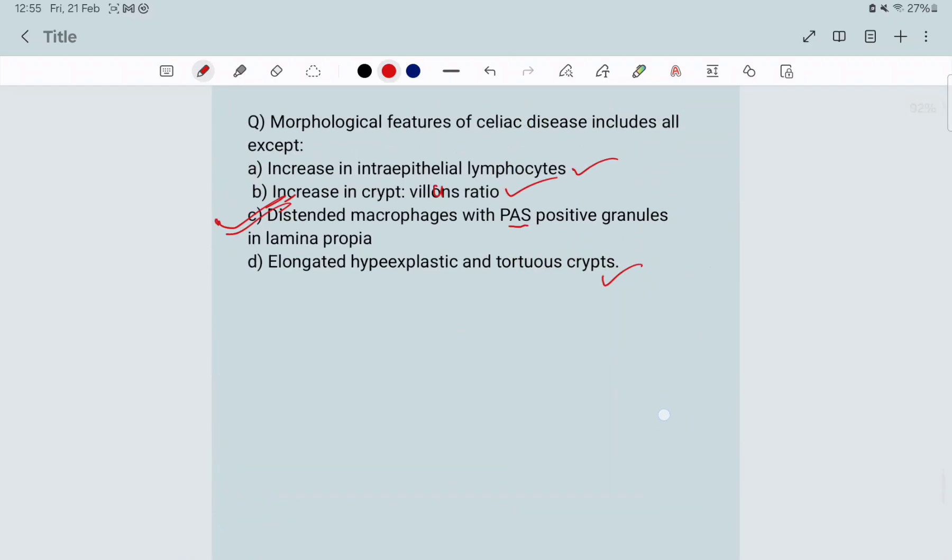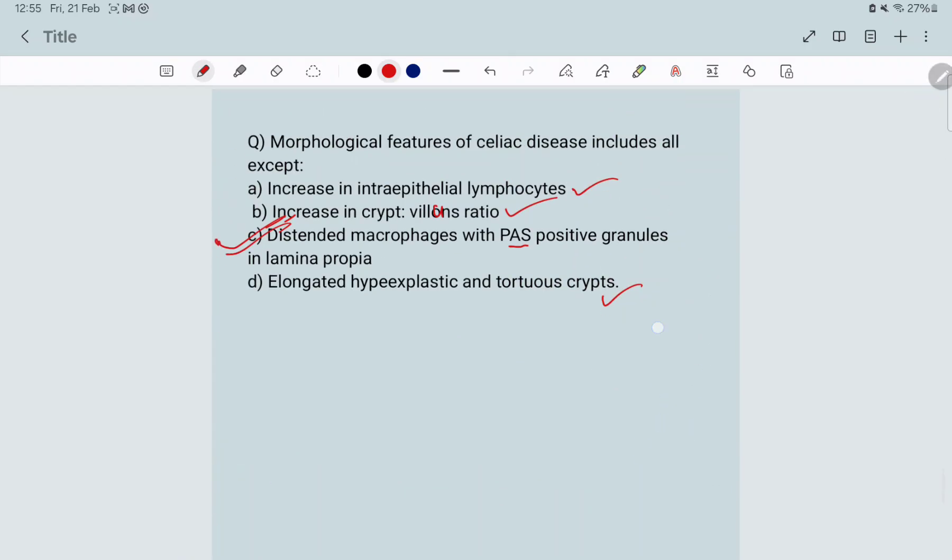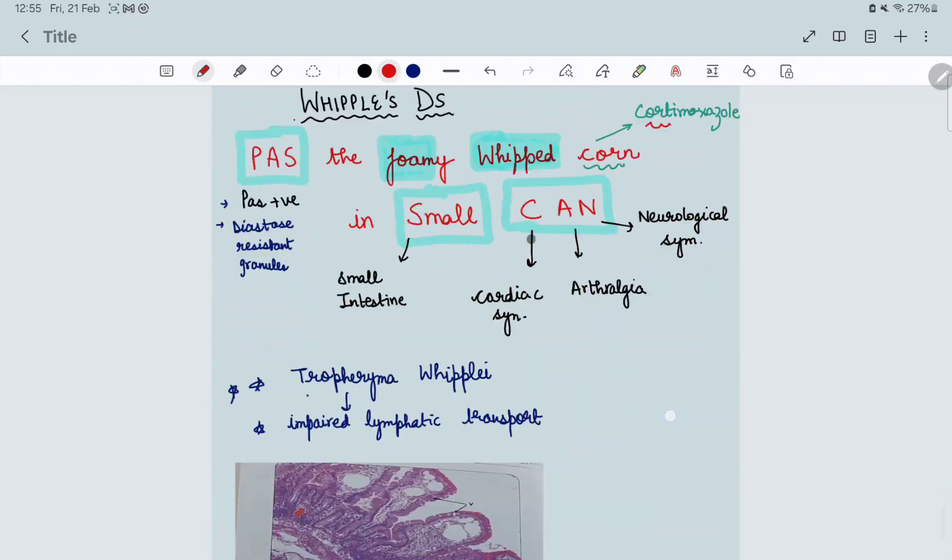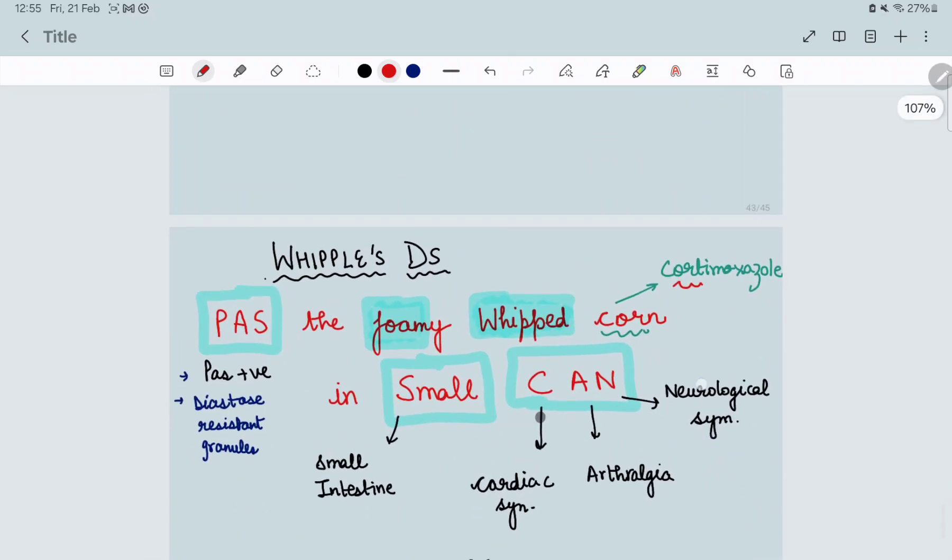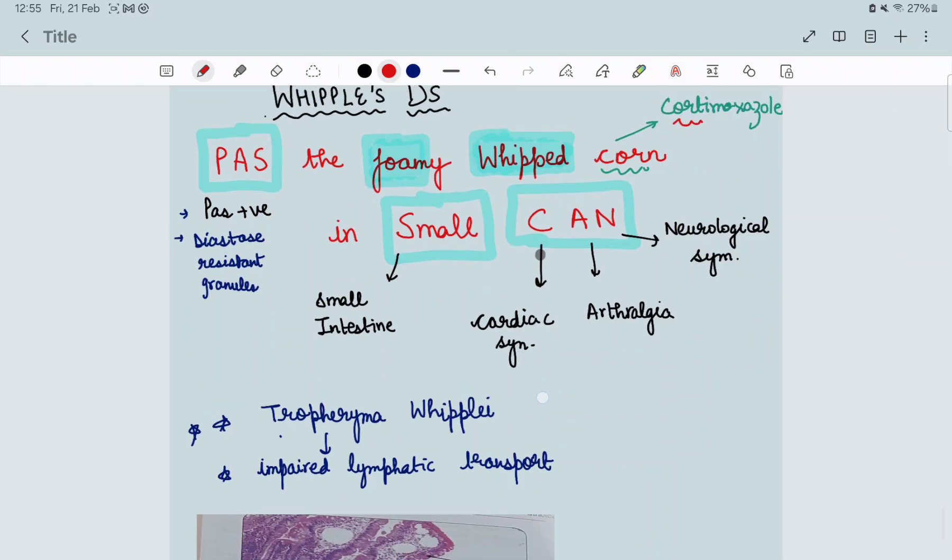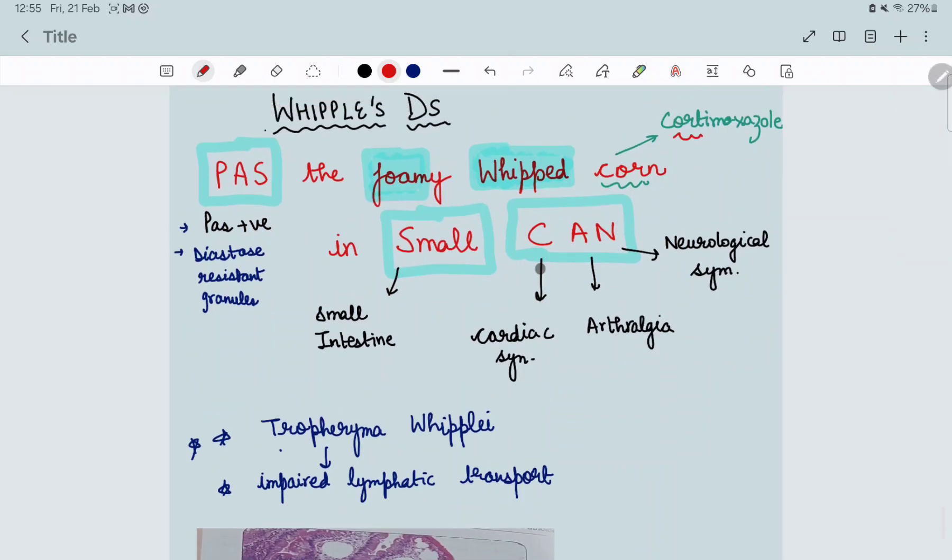This is about celiac disease. Now let's study about the C option, that is Whipple's disease. I used to learn it by a mnemonic: Pass the foamy whipped corn in small can. I know it is cream in froster, it is cream, but I used to learn the corn, I will tell you why. First, pass - why pass? Because it is PAS positive, diastase resistant granules are present.